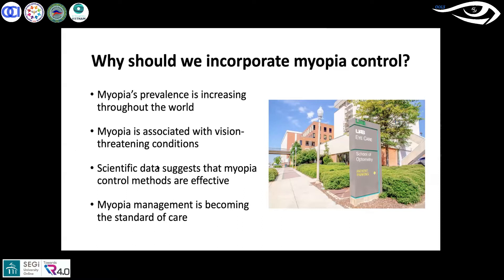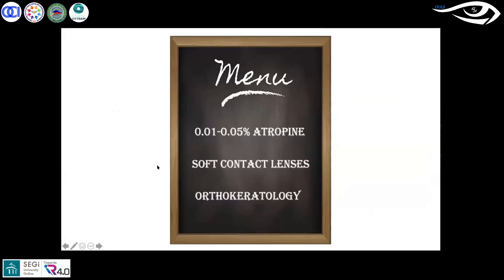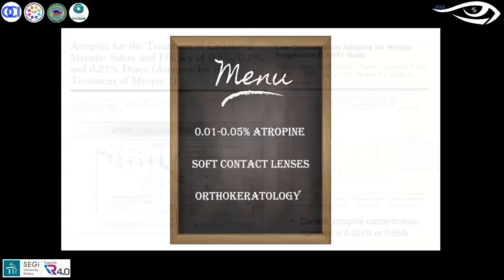This is the menu we offer in the UAB Eye Care myopia control clinic. We offer atropine, different types of soft contact lenses, and orthokeratology. I'm going to go through some key aspects of all three of these before we jump into patient care.